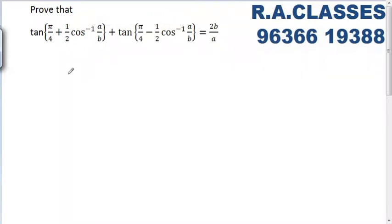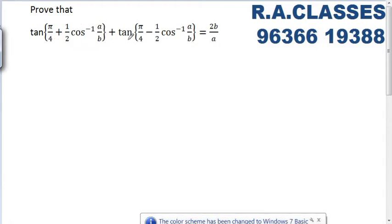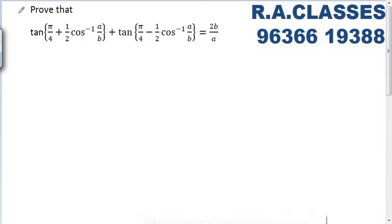Hello students. Our next question is: prove that tan(π/4 + ½cos⁻¹(a/b)) · tan(π/4 - ½cos⁻¹(a/b)) equals 2b/a. This question appeared in several board examinations. Let's see how to solve this question.